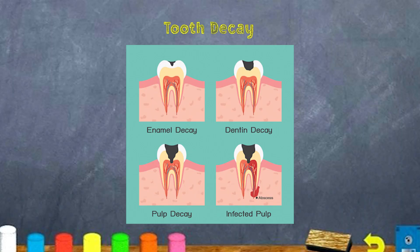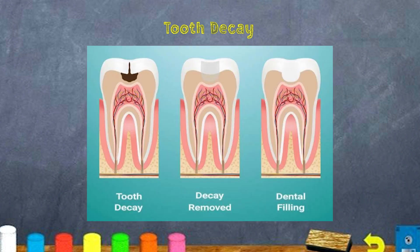Here you can take a look at an image of what enamel decay or cavity decay looks like. You can see the early stages, and then it moves on until it infects the pulp, which can be very painful. How do we fix that? By getting a filling done. Here you can see the tooth is decayed, the decay is removed, it's drilled and cleaned, and then a dental filling is put in place of where that cavity was to prevent further damage to the pulp or nerve endings of the tooth.